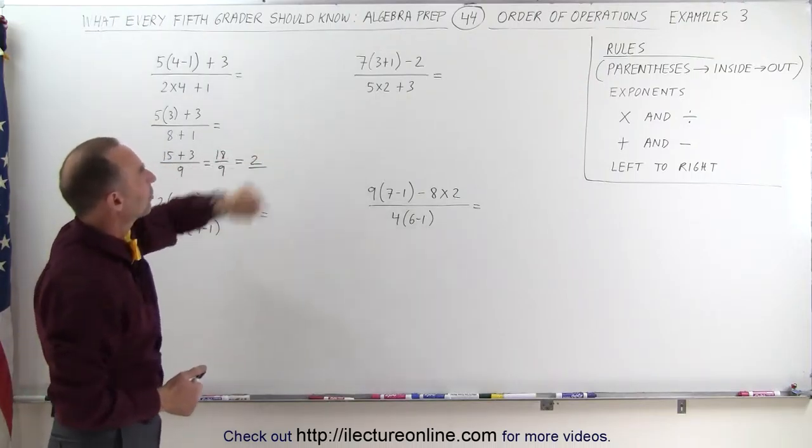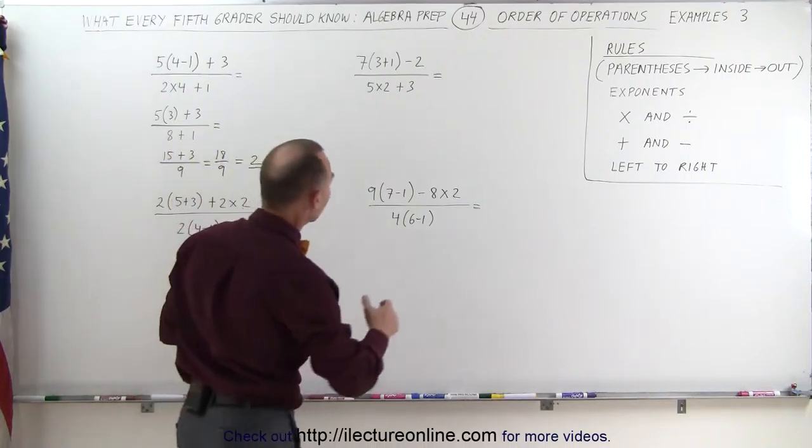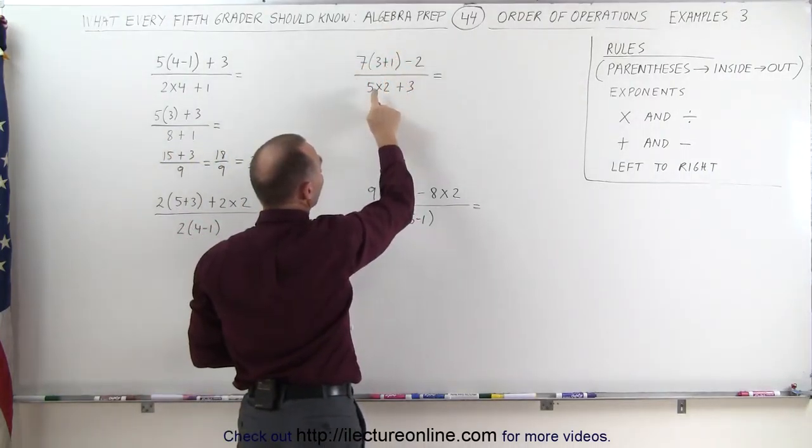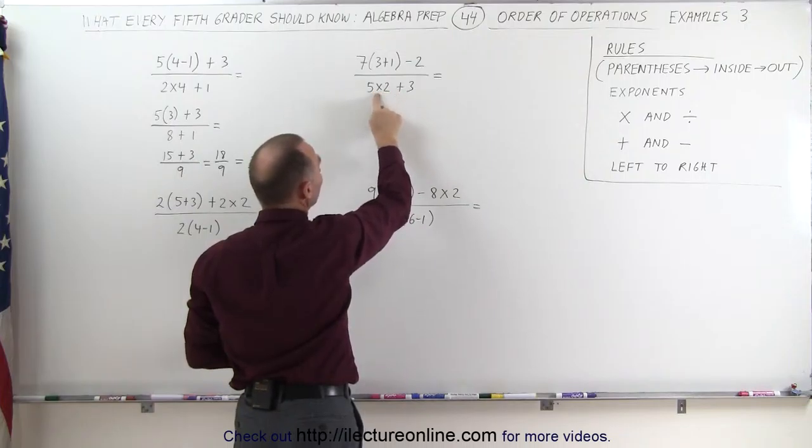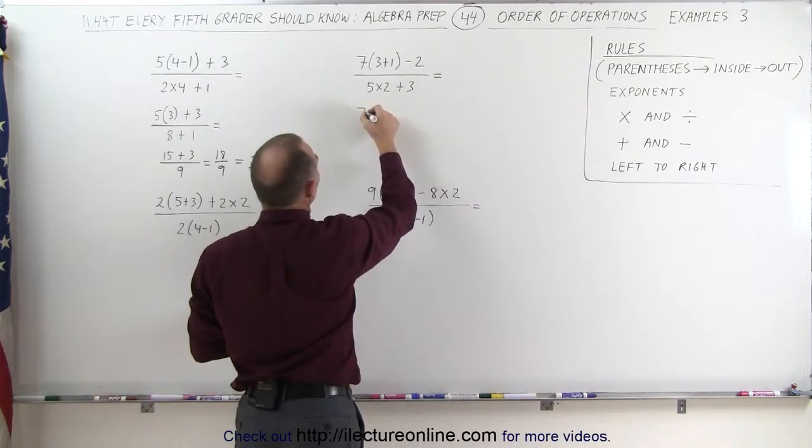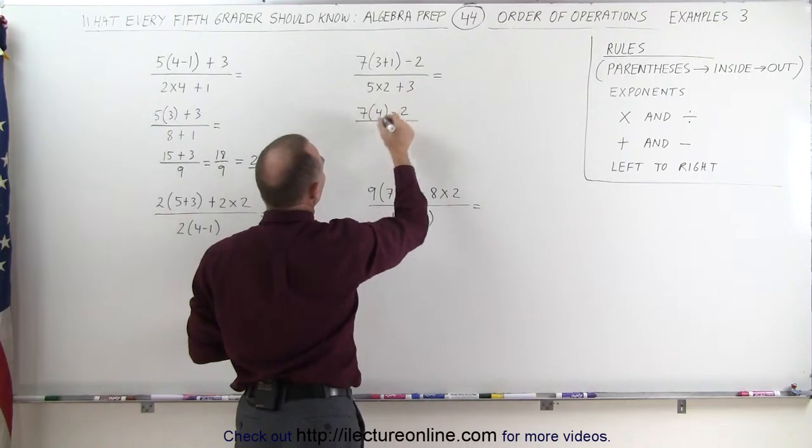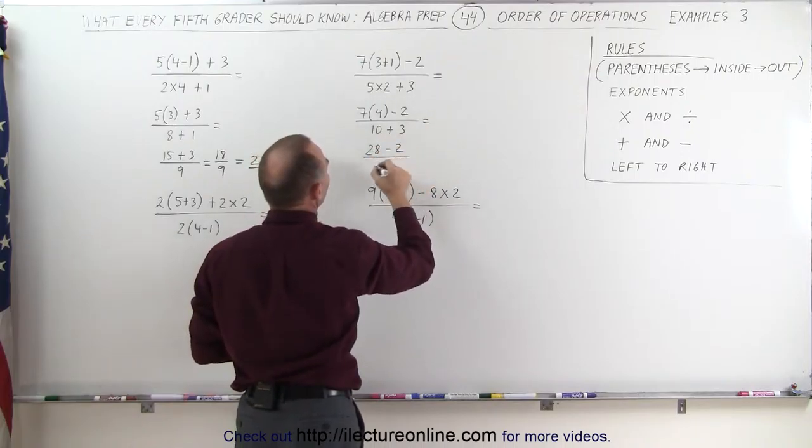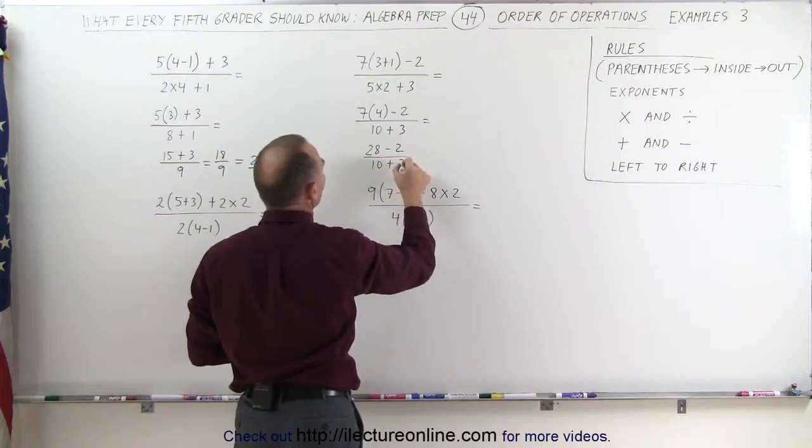Let's take a look at this one over here. Again in the numerator we have parentheses, we'll take care of those. In the denominator we have a multiplication and an addition, we'll do the multiplication first. The numerator then becomes 7 times 3 plus 1, which is 4, minus 2, divided by 5 times 2 is 10, plus 3. 7 times 4, that's 28, I'll put an equal sign there, that's 28 minus 2, divided by 10 plus 3.